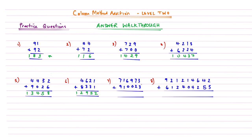Question seven: starting from the right — 2 add 3 is 6; 7 add 2 is 9; 9 add nothing is 9; 6 add nothing is 6; 1 add 1 is 2; then 7 and 9 added together gives 16, a two-digit number, so we write that under the invisible column, giving 1,626,996.